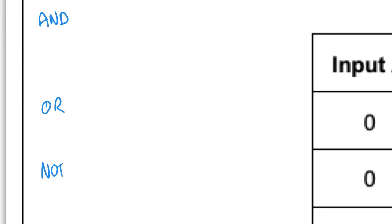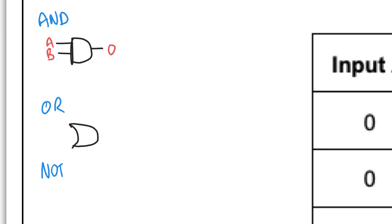For an AND gate, it starts flat on the left side and is curved on the right. It has two inputs and one output. For an OR gate, what's different versus AND is it's curved on the input side as well. Two inputs, one output. A NOT gate is drawn as a triangle with a small circle at the output end — one input, one output.